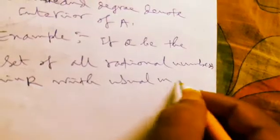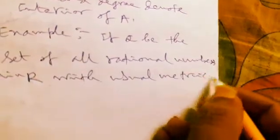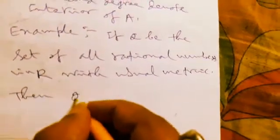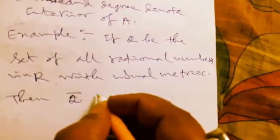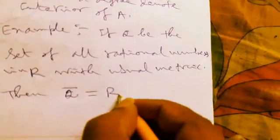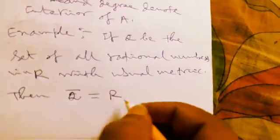then obviously Q bar, that is considering all limit points, that will be treated as R, the total space.